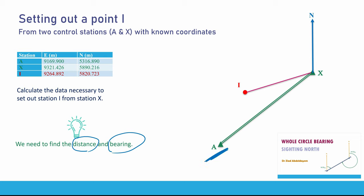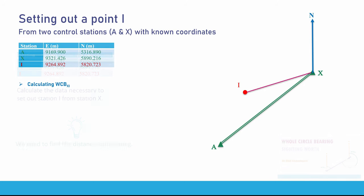We have two known stations, X and A. For example, from X, if I know the distance between X and I, and I know the angle between these two lines, I can use the total station to set out I in its exact location on the ground. So we are going to calculate this angle and this distance so that we can set out I.